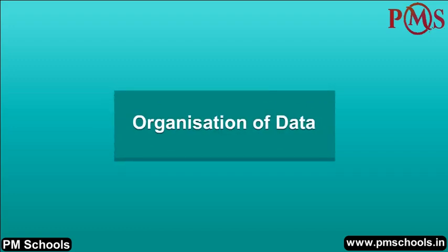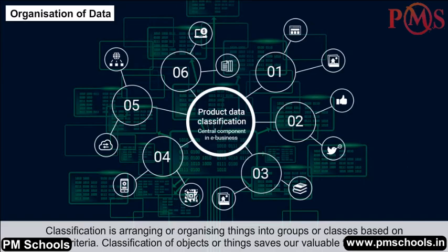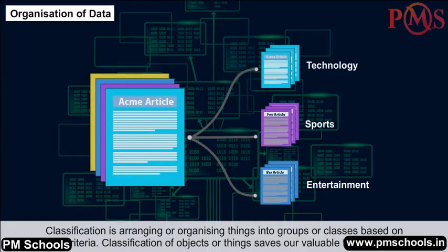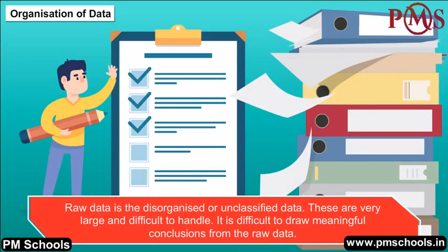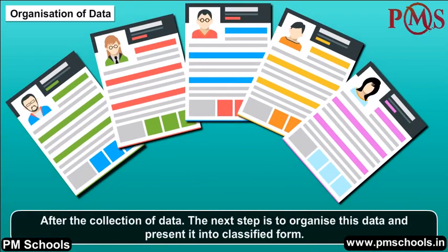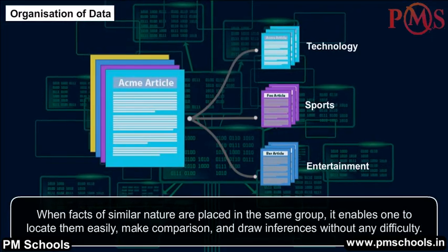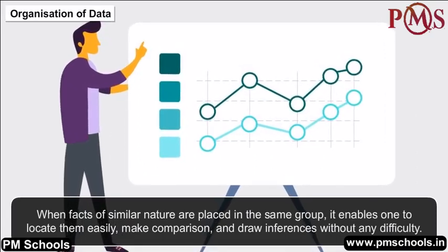Organization of data: Classification is arranging or organizing things into groups or classes based on some criteria. Classification of objects or things saves our valuable time and effort. Raw data is the disorganized or unclassified data — it is very large and difficult to handle, and it is difficult to draw meaningful conclusions from it. After collection, the next step is to organize and present data in classified form. When facts of similar nature are placed in the same group, it enables one to locate them easily, make comparisons, and draw inferences without difficulty.